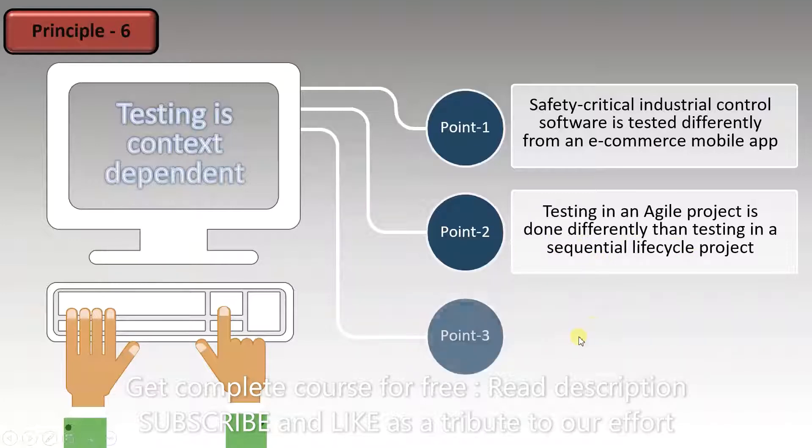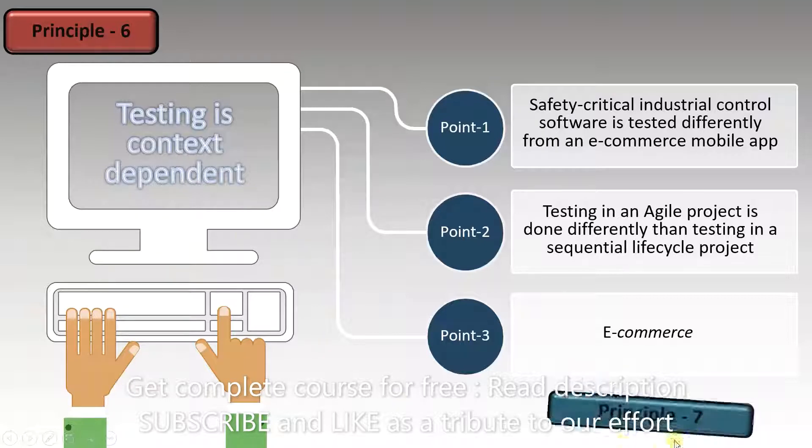The final point is about e-commerce. This is connected to the first point. How we test e-commerce is completely different. This is why principle 6 emphasizes that testing is context dependent. Keep that in mind, and let's move on to principle 7.